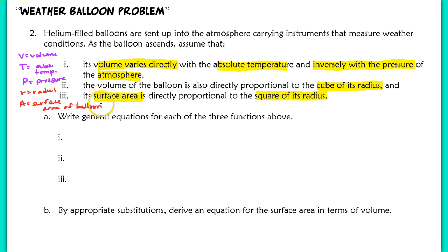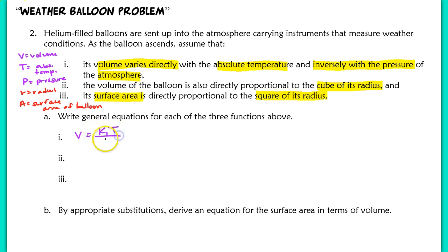Writing the general equations: Volume varies directly with absolute temperature and inversely with pressure, so V equals K₁ times T over P. The volume is also directly proportional to the cube of its radius, so V equals K₂ times R cubed. And the surface area is directly proportional to the square of its radius, so A equals K₃ times R squared.